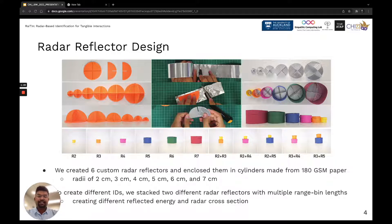To create different IDs, we utilized different cylinder lengths to create new stacking IDs. The sensor range bin resolution is 2.5 cm. Hence, stacking two radar reflectors with multiple range bin lengths creates a different reflected energy and radar cross-section.